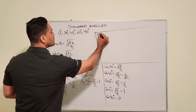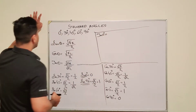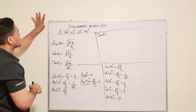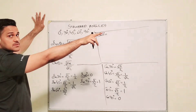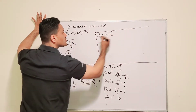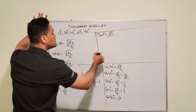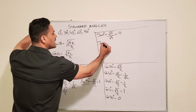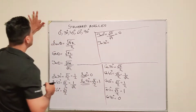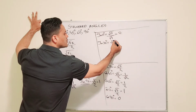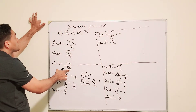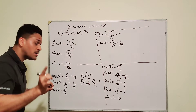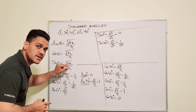Now we're going to find all the standard angles for tan, starting with tan 0. The formula for tan is square root of fingers on the right divided by square root of fingers on the left. Bending the 0 degree finger, there are no fingers on the right — square root of 0 at the top — and four fingers on the left — square root of 4 at the bottom. But 0 over anything is just 0. For tan 30, fingers on the right are 1 — square root of 1 at the top — and fingers on the left are 3 — square root of 3 at the bottom — giving 1 over square root of 3.